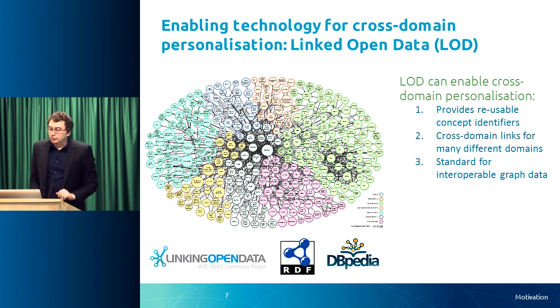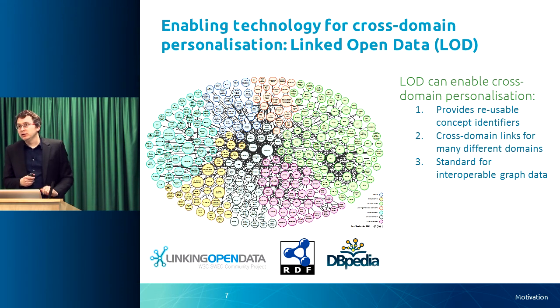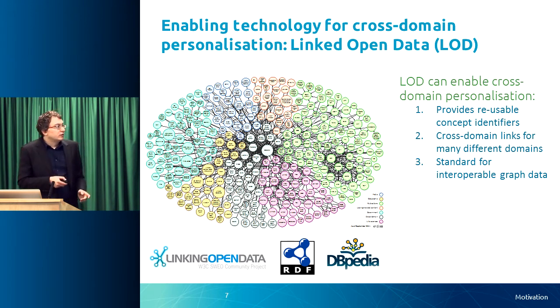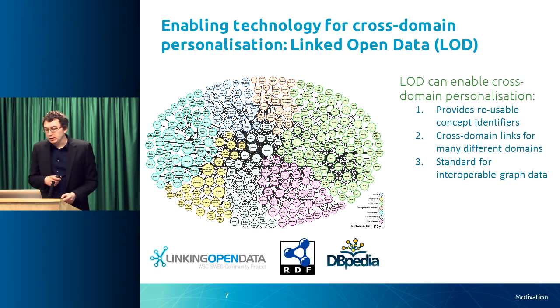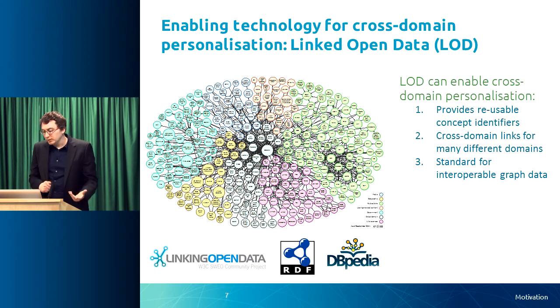Linked open data can provide those links between domains, which is why I propose to use it in my approach. There are three reasons: first, it provides reusable concept identifiers from many different conceptual domains — DBpedia at the center of the Linked Open Data Cloud covers books, music, and much more. Second, cross-domain links are provided between items from those domains, so there's not a void between books and music. And finally, this is all standardized — linked open data provides a standard for graph data that is interoperable, making it easier to share user preference data between personalized services.